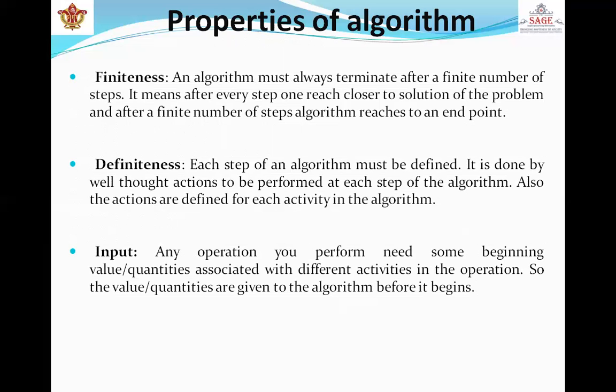Next is properties of algorithm. First is finiteness. An algorithm must always terminate after a finite number of steps. It means after every step one reaches closer to solution of the problem, and after a finite number of steps, algorithm reaches to an end point. Second is definiteness. Each step of an algorithm must be defined. It is done by well thought action to be performed at each step of the algorithm. The actions are defined for each activity in the algorithm. That means the steps in the algorithm must be clearly defined and detailed.